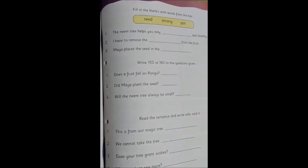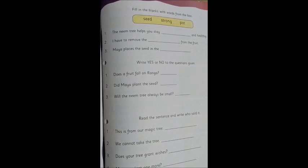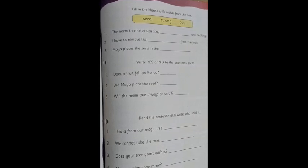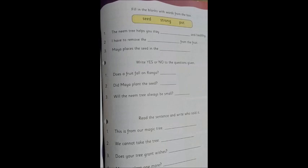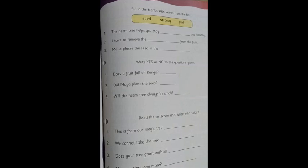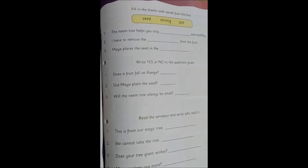So we know the meaning of these words also. Seed is something from which the other plant grows. Small particles from which other plant can grow. Strong is to be strong and healthy. And pot is a thing in which we plant a seed. So now let's see how these words can be used in a sentence.